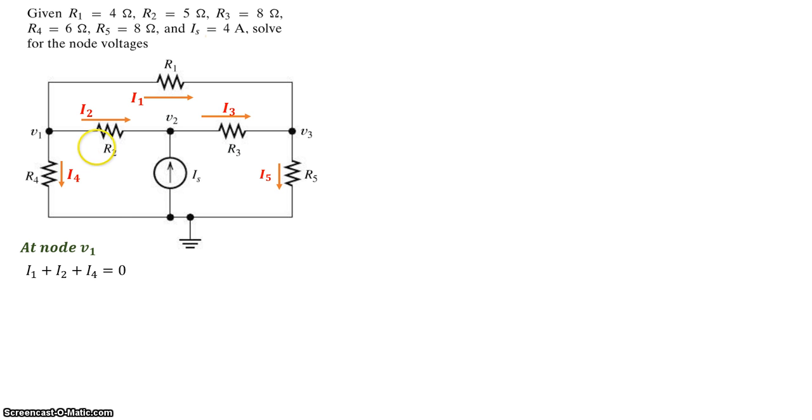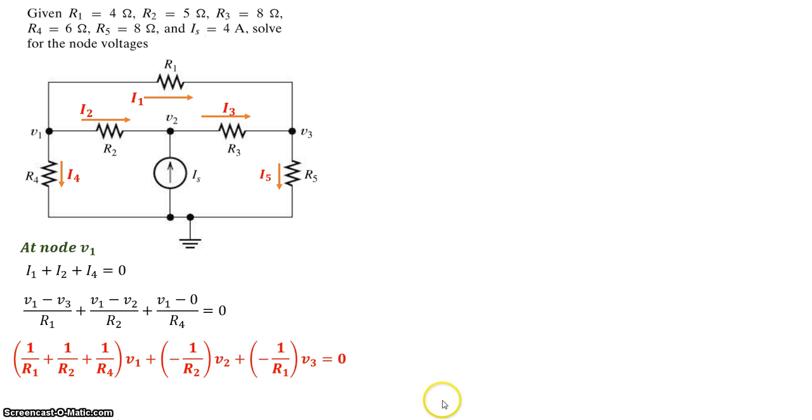Applying Ohm's law, we get for I1, V1 minus V3 divided by R1. For I2, we get V1 minus V2 divided by R2, and for I4, we get V1 minus 0 divided by R4. Now, putting this equation in a standard form, we're going to basically collect the coefficients for V1, V2, V3, and put them in a standard form.